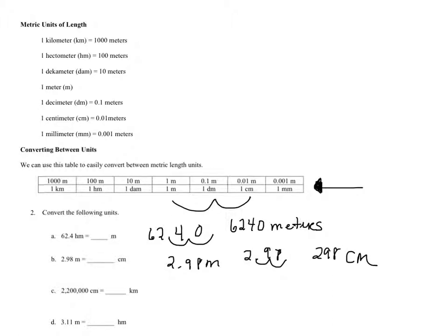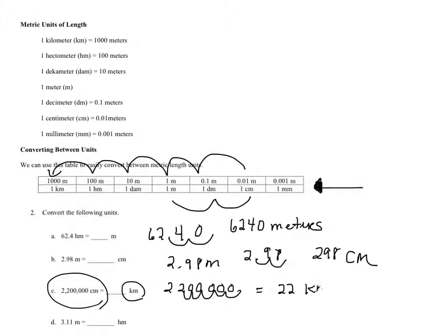The last example, we want to convert centimeters to kilometers. So we have 2,200,000 centimeters, decimal's at the end. We want to convert it to kilometers, so we're going from centimeters to kilometers. And I'll do it on the top here, so we're going to go one, two, three, four, five. This time we're going to the left, so we're moving it one, two, three, four, five. So that equals 22 kilometers.